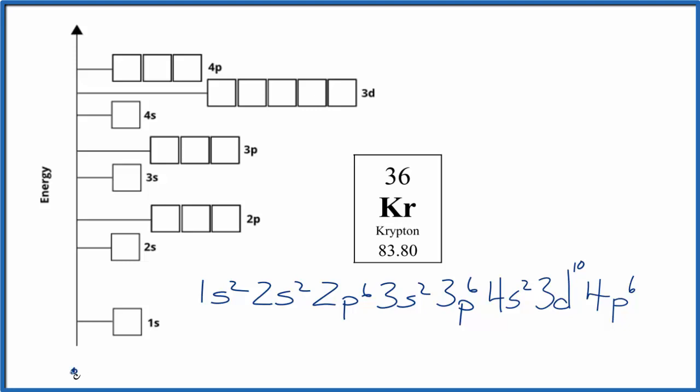You can think of the nucleus as right here, and then these are the energy levels. Think of them as shells around the nucleus. So let's start with 1s2. We put those in their opposite directions, 2s2, 2p6, spread them out and then pair them up.